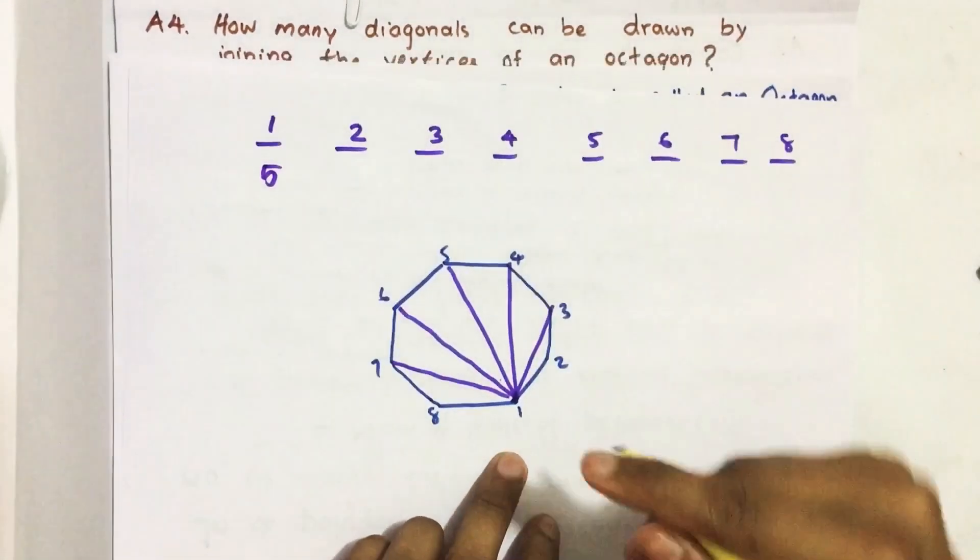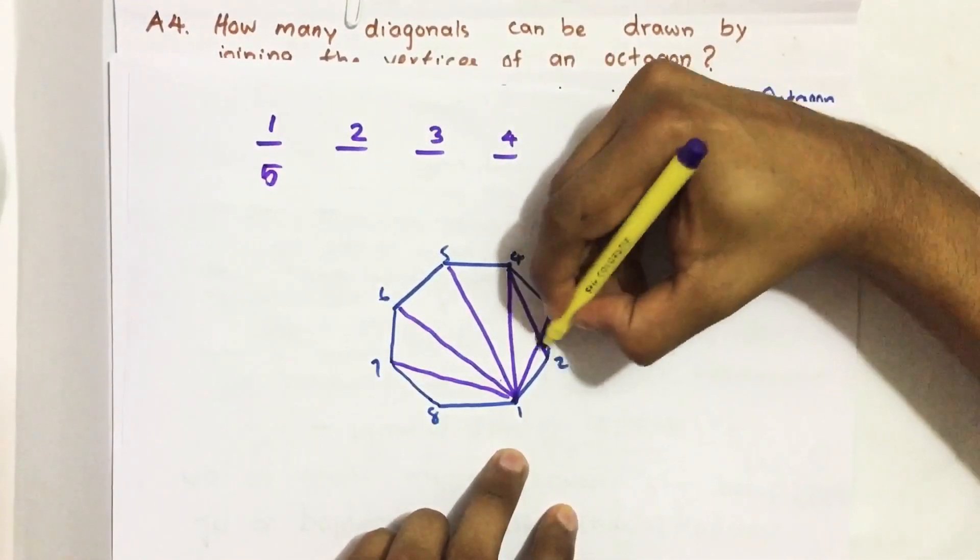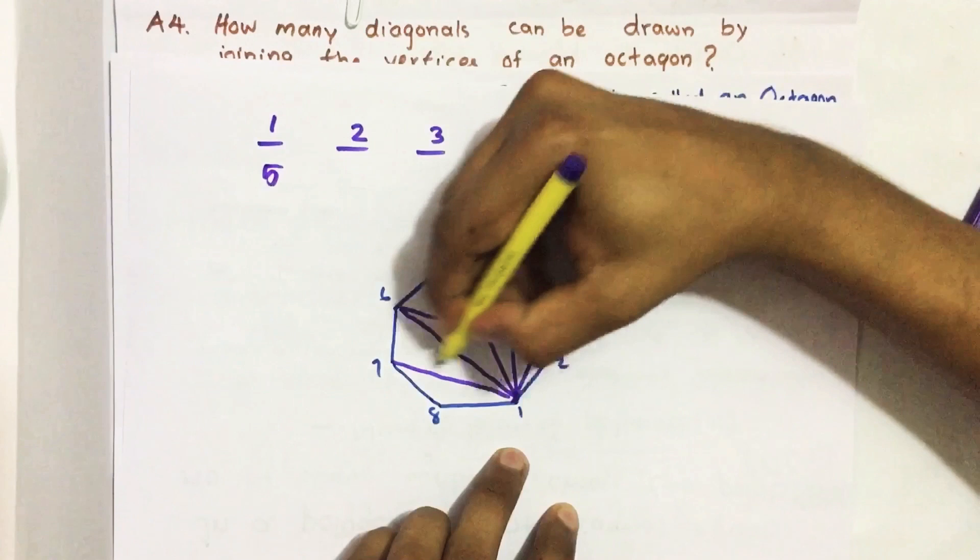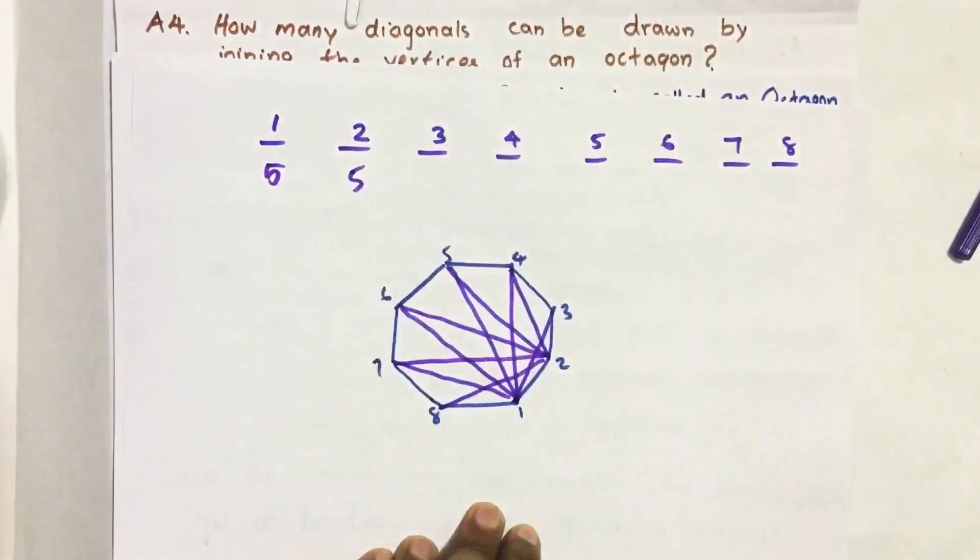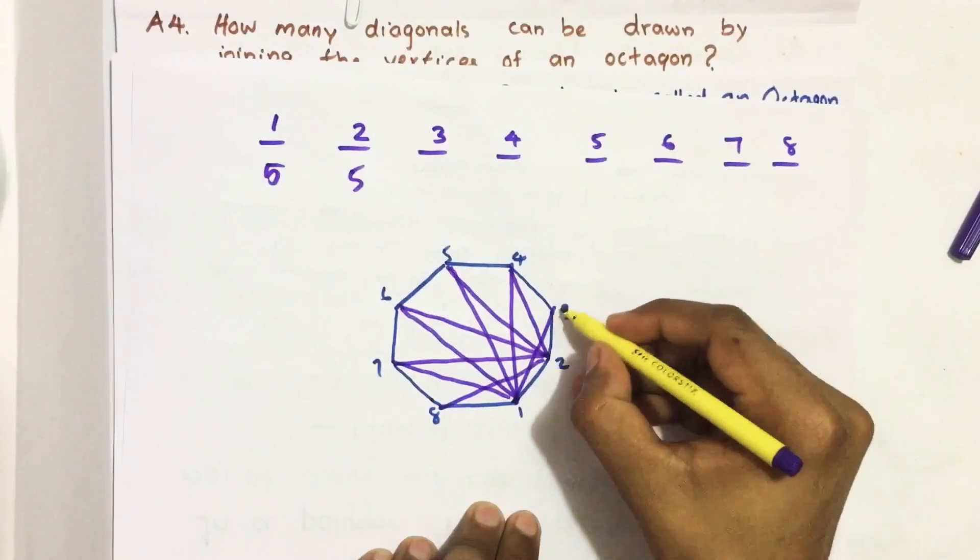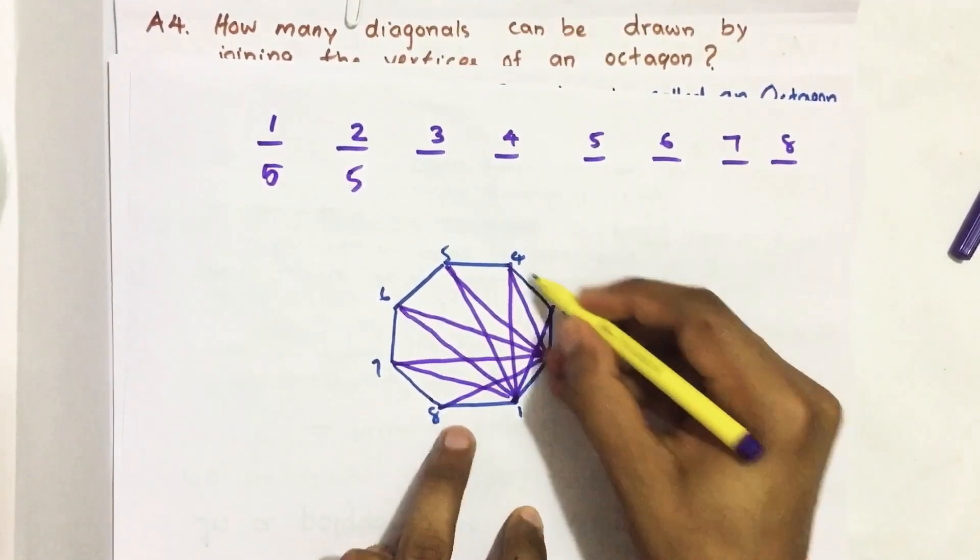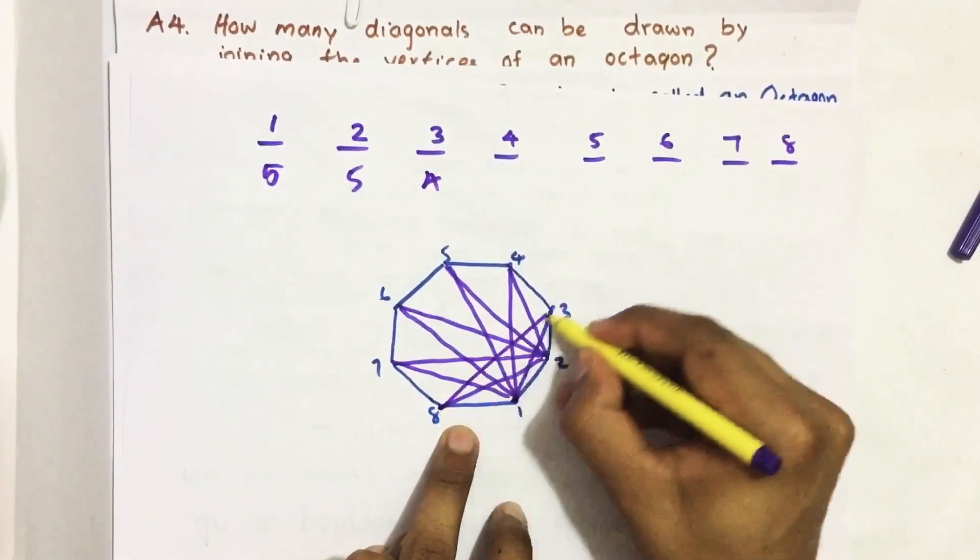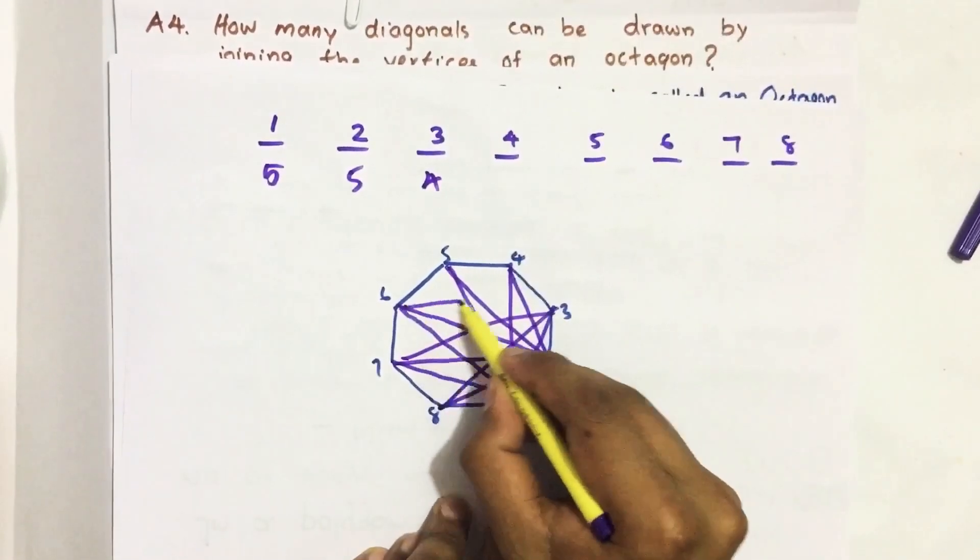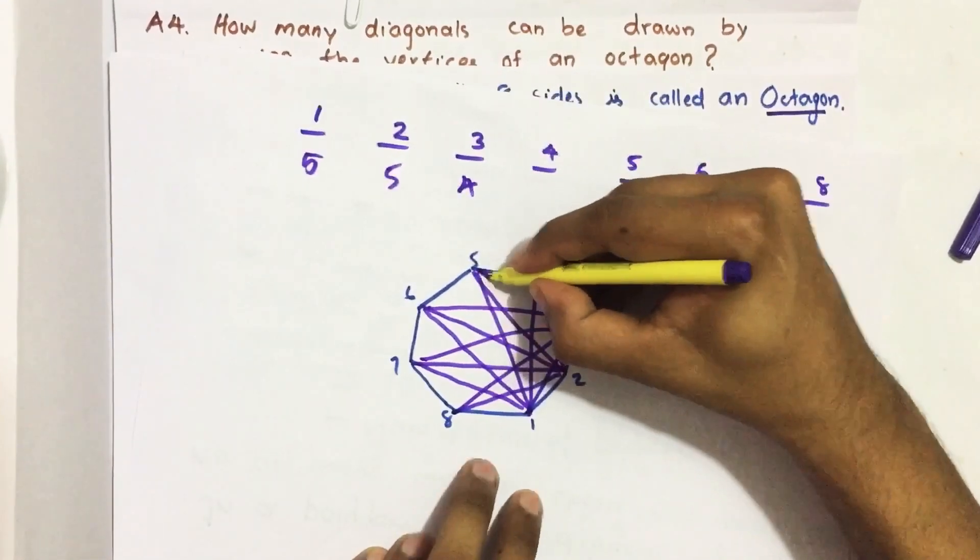Similarly from vertex 3, already 3 to 1 is drawn, so remaining 4 diagonals are possible: 1, 2, 3, 4.